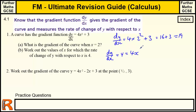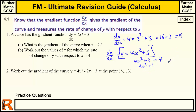dy by dx equals 4 when 4x squared plus 3 equals 4. We have to solve this equation. Take away the 3 from both sides to get 4x squared equals 1, then divide by 4 to get x squared equals a quarter. The square root of a quarter is a half, but also minus a half, because minus a half squared is also a quarter. Don't forget to include both the positive and negative values when you find a square root.